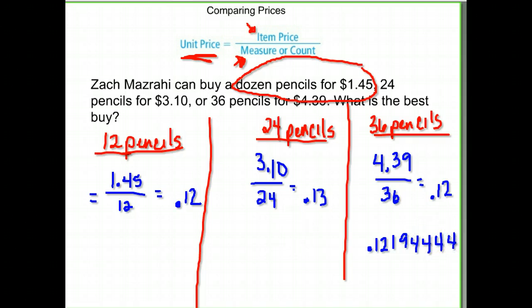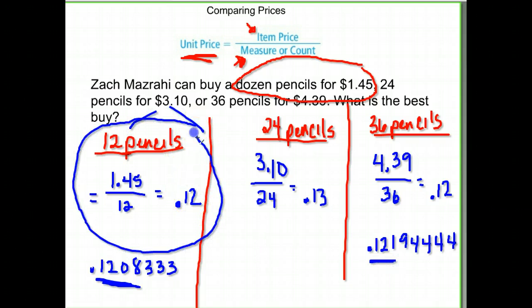And over here, my dozen pencils. I'm going to divide again so I have the full number. It was 0.120833. So in this case, notice the 0.120 is smaller than 0.121. So the 12 pencils is actually going to be my best deal.